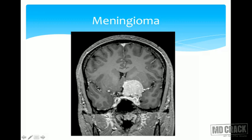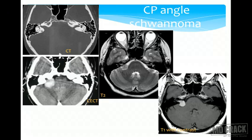A meningioma is an extra-axial lesion that shows brilliant enhancement on post-contrast study. Beyond identifying the meningioma itself, we assess surrounding structures — whether it is encasing the left MCA, the optic nerve and chiasm, or causing hydrocephalus — since all this information determines the surgical approach and treatment planning.